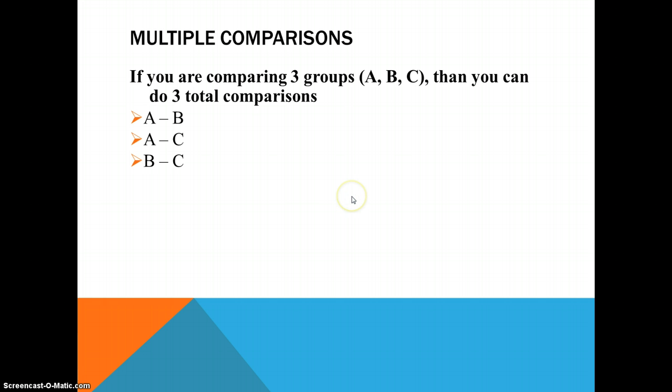So if we're comparing three things and we ended up with a significant ANOVA, we want to find out using post-hoc comparisons, is there a difference between A and B, A and C, or B and C? And if there's more than three groups, then we do more than three comparisons.